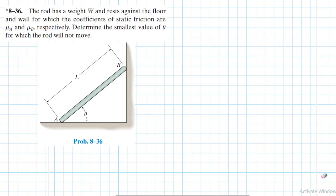Hello, I welcome you all. The problem reads: the rod has a weight W and rests against the floor and the wall for which the coefficients of static friction are μ_A and μ_B respectively. Determine the smallest value of θ for which the rod will not move.